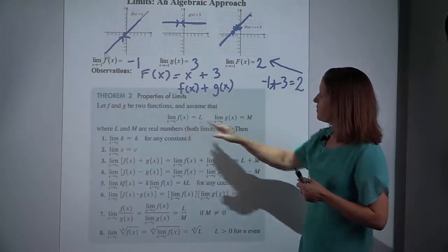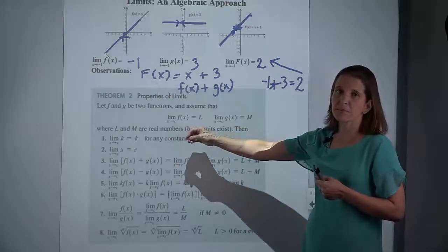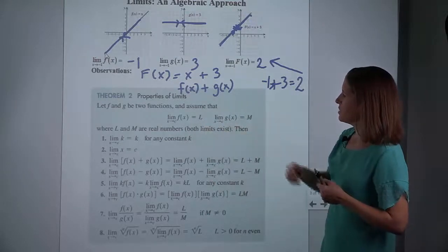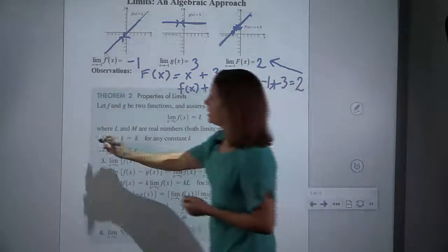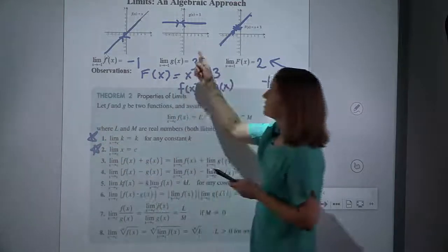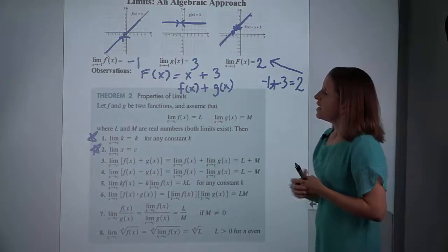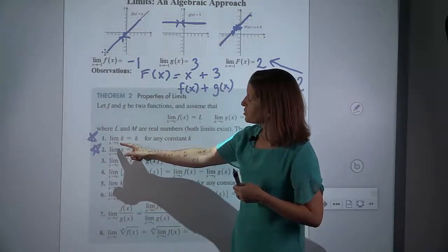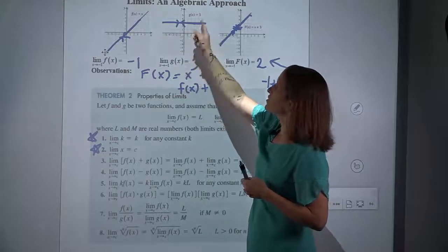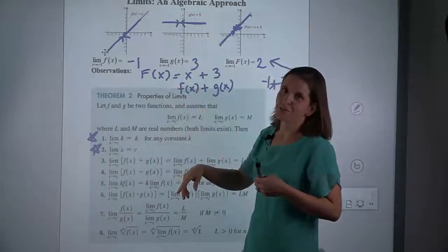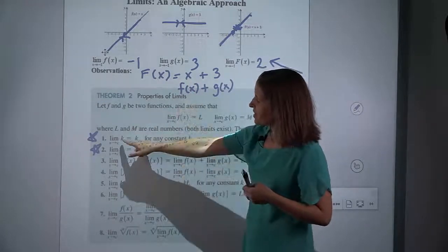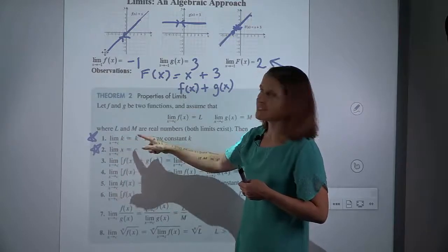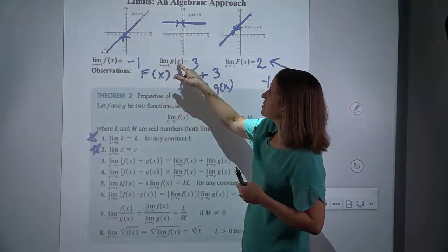We have two different functions f and g, but we're approaching the same value c. C is some number that x is getting closer and closer to. The answer to the limit for f is L and the answer to the limit for g is M. These two are going to be particularly important. The first one says: if the limit as x approaches c of k — where k is a constant, like our function y equals 3 — then no matter what x you're approaching, y is always that constant. So the limit of a constant is that constant. The limit as x approached negative 1 of the constant function 3 was 3.